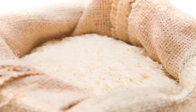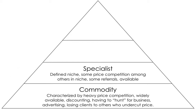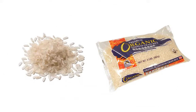That's normal everyday rice. The next level of the pyramid is the specialist level. With a specialist, it's something more defined — there's a niche and there's still price competition, but a little bit less. You can get some referrals and it's still pretty widely available. The comparison in the rice analogy would be regular rice versus maybe organic rice, which has a little differentiating factor so they can charge a little bit more.